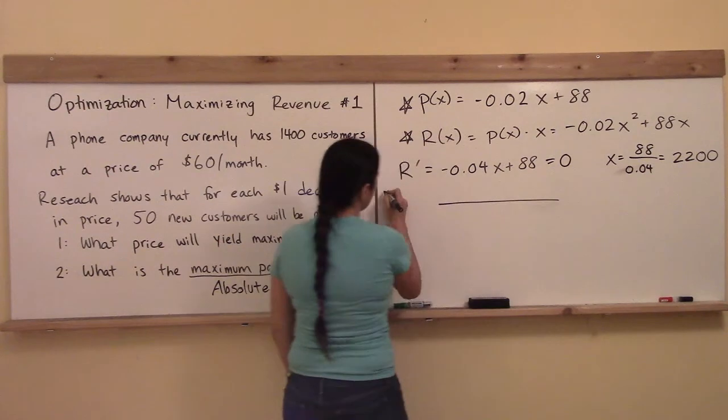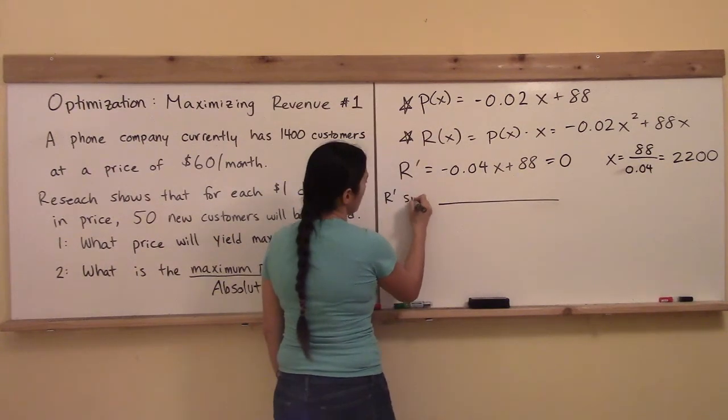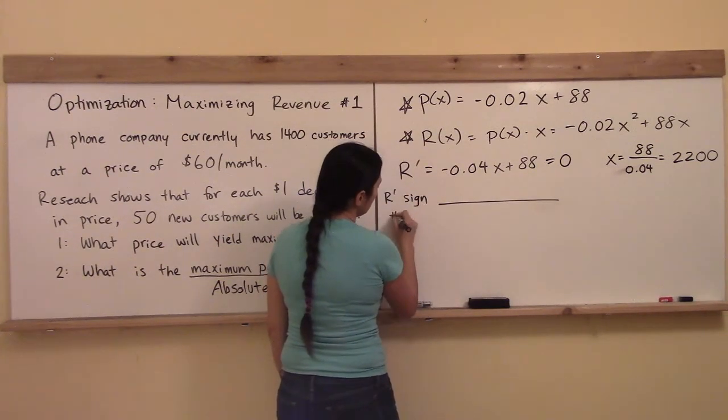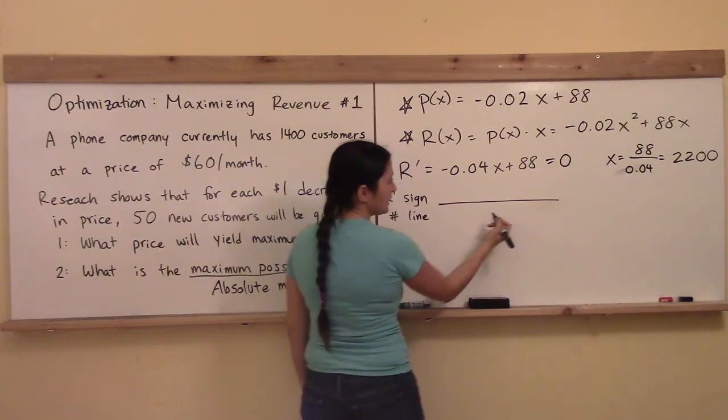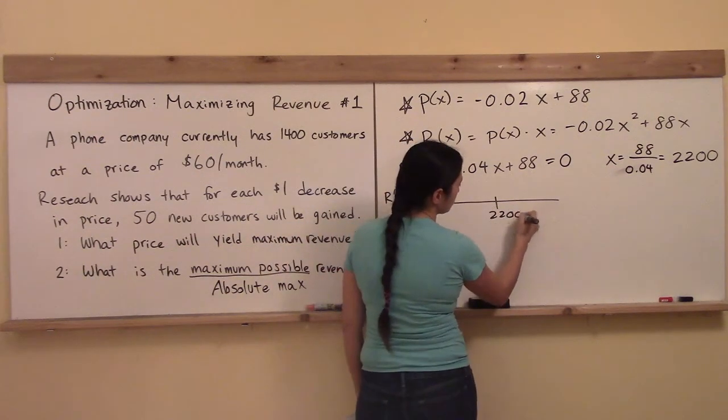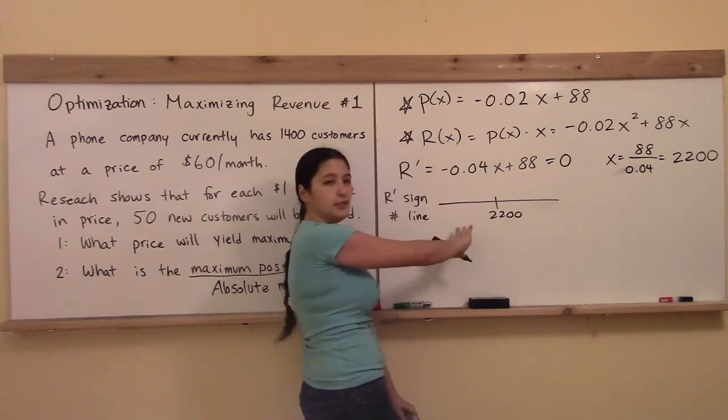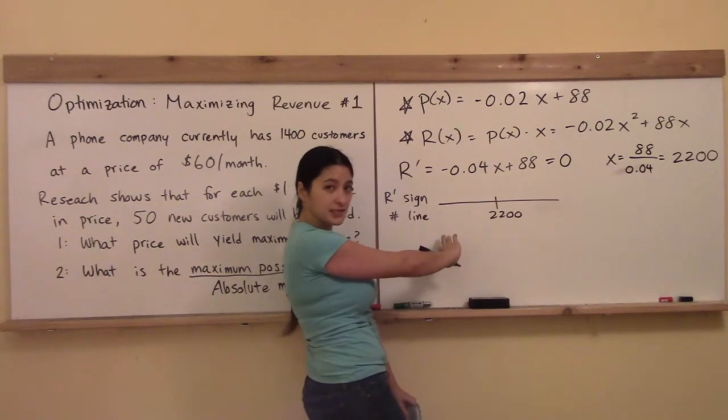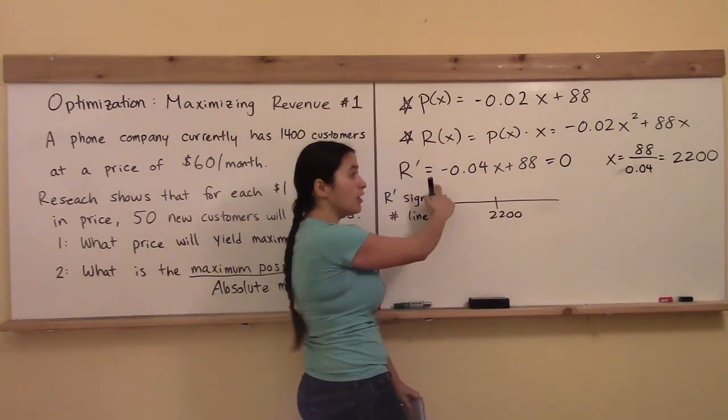So then you're going to want to do the R prime sign number line, and then you're going to take off the critical point that you just located, and on one side you take a test point. What are you plugging it into? Into the R prime, right?